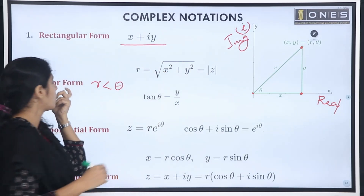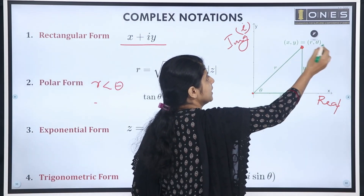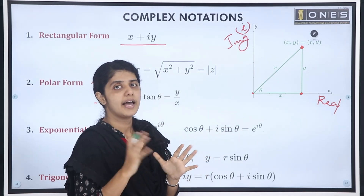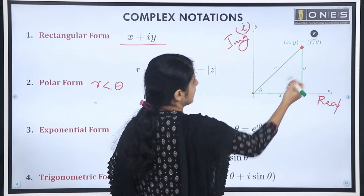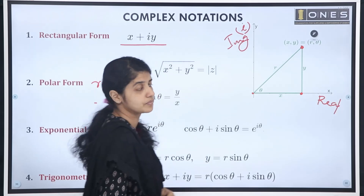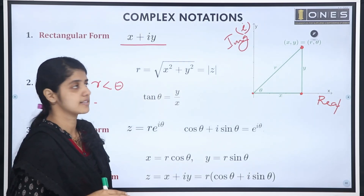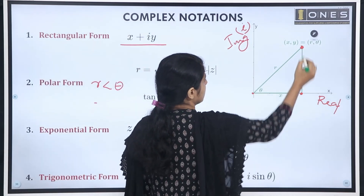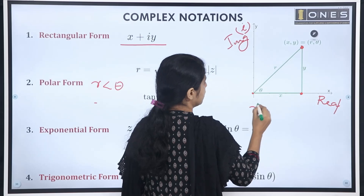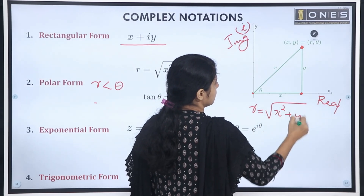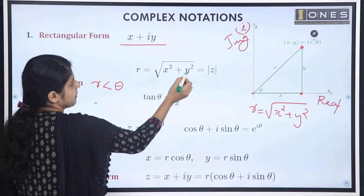We can use this to derive the polar formula. The point x plus iy in polar form is represented as r angle theta. These two are equal. Considering a right triangle, the distance r from the origin to the point gives us r equal to root of x squared plus y squared. This magnitude represents z.